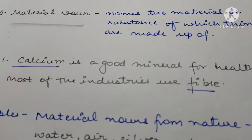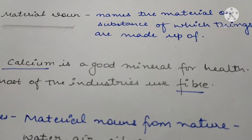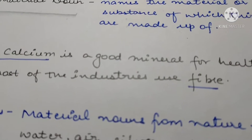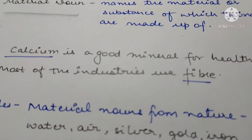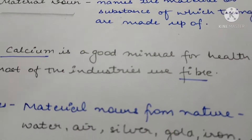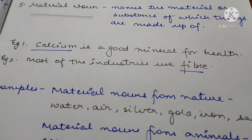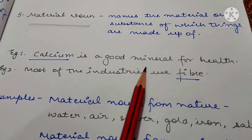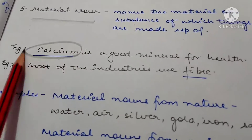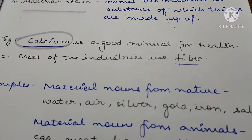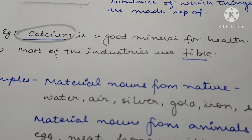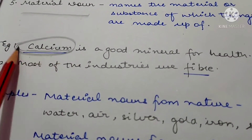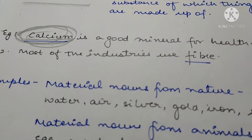First, material includes some things, and second, with the help of that material you can create something. So that is your material noun. Example number one: Calcium is a good mineral for health. So here, calcium is a material noun — it is the name of a mineral, and calcium is your material.